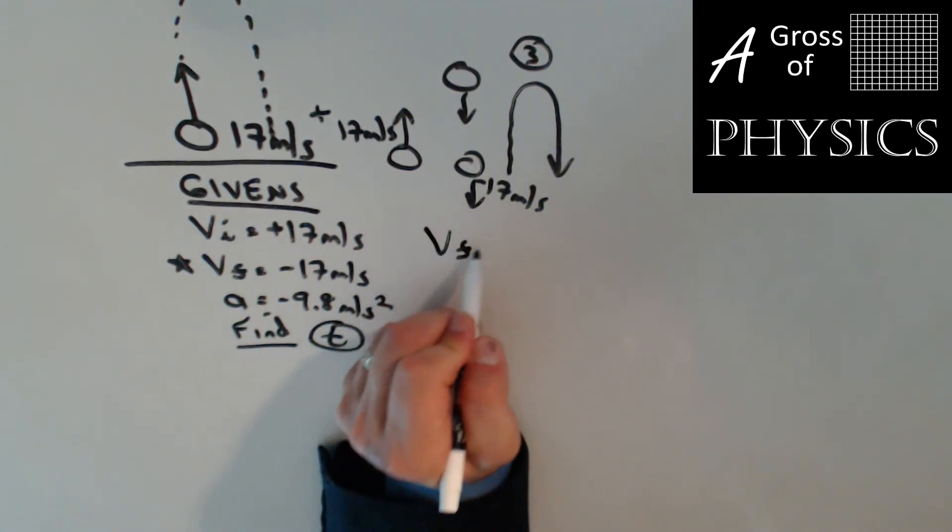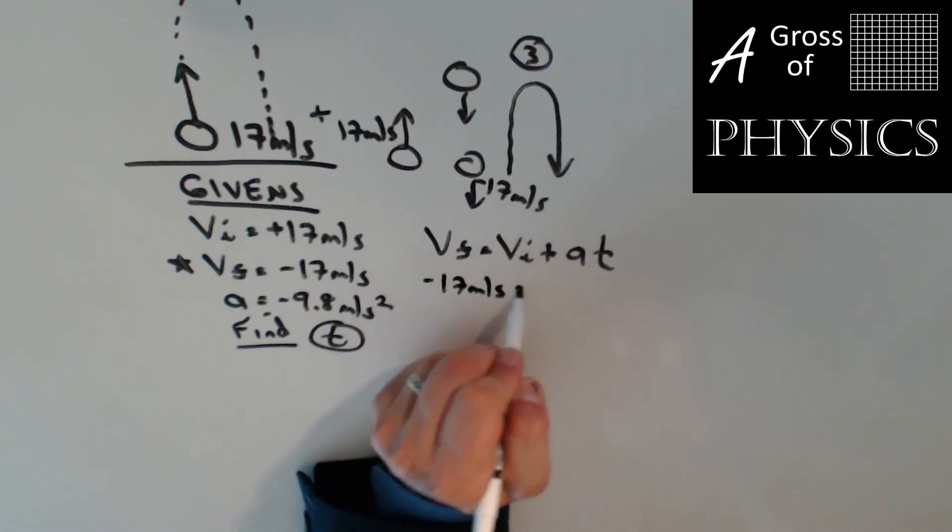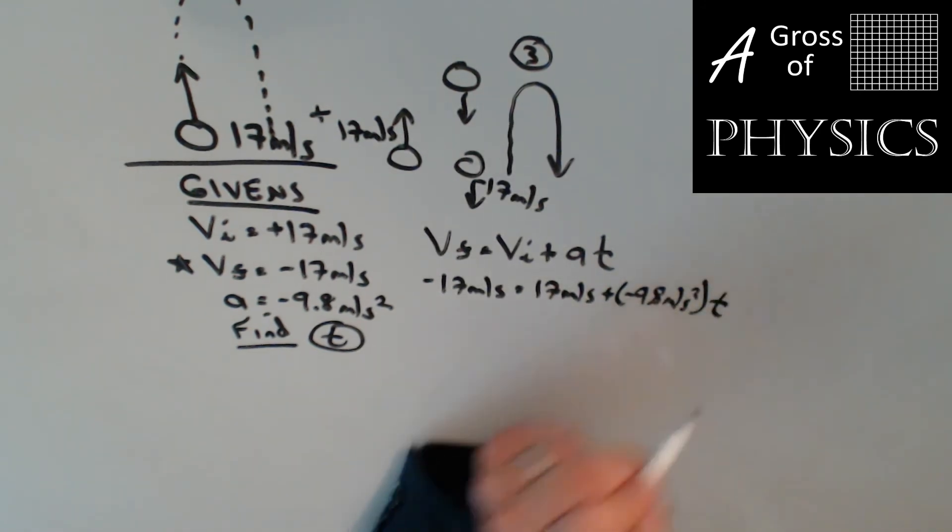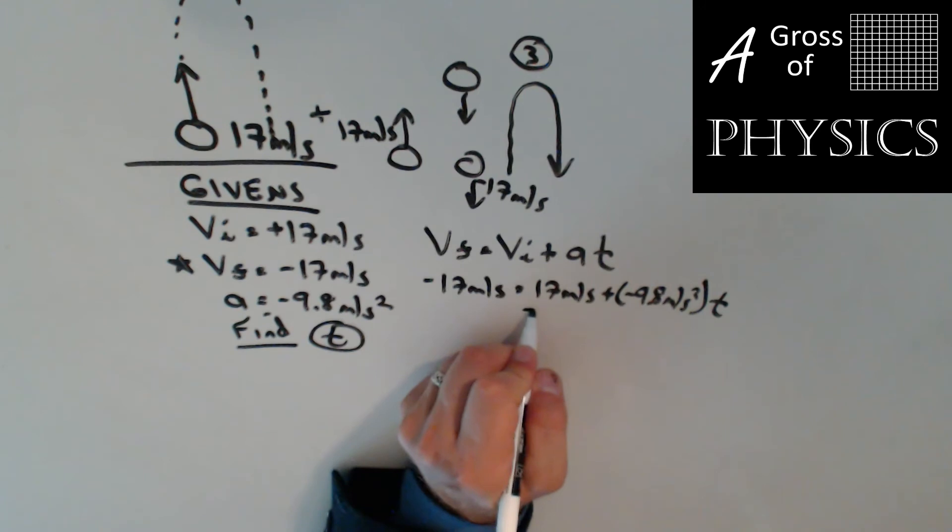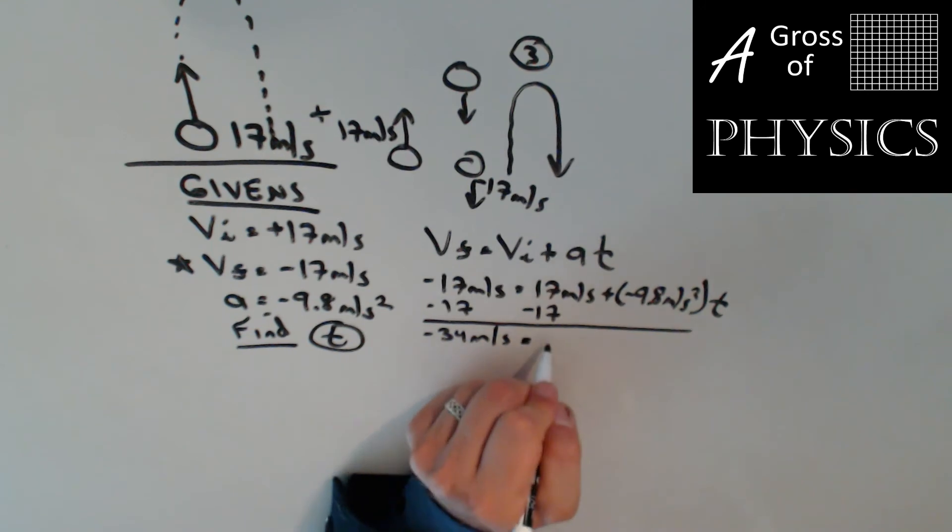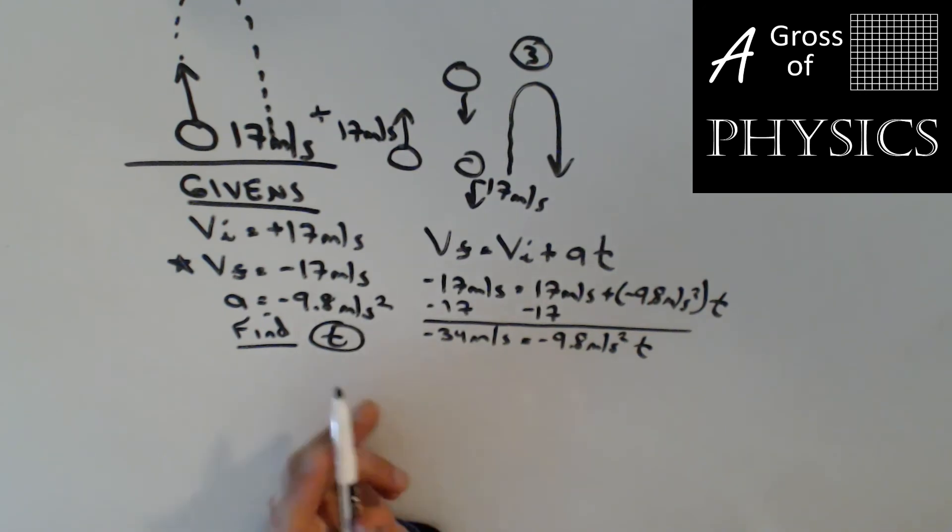I'm going to use equation 3. VF equals VI plus AT. Negative 17 meters per second equals 17 meters per second plus negative 9.8 meters per second squared times t. Now, the reason the signs matter is because if I had them both positive, I'd subtract and get zero. And the time would end up being zero. Now, the reality is when I subtract my 17, I should get negative 34.